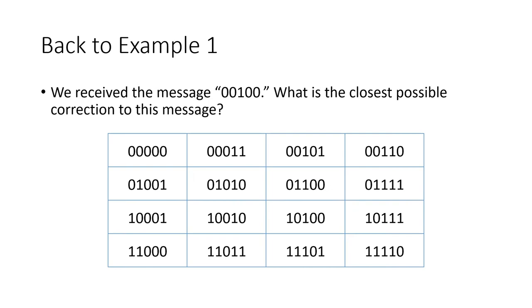So let's try this. We have our dictionary — the code words from the previous lecture. We received the message 00100, and we're going to compare that to every code word in our dictionary. Lining up 00100 with the first entry, I see one digit in which those messages differ. So the distance here is one.